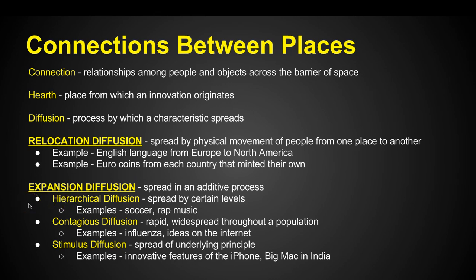First, there's hierarchical diffusion, which is a spread at certain levels — a certain hierarchy. Think of it like kings who are in charge: if they're going to spread information, it goes in a certain pattern. Soccer spread through certain soccer clubs that had the time to do this recreational sport. Rap music started in urban areas and spread from urban area to urban area because it was a certain demographic — a certain level of people — listening to it.